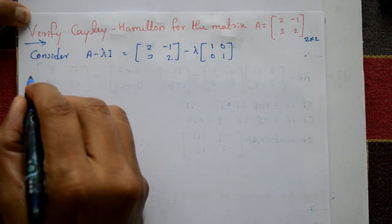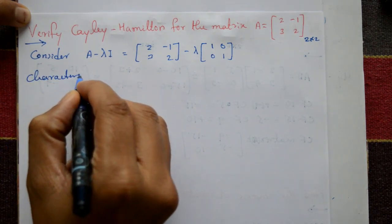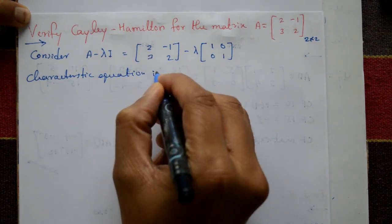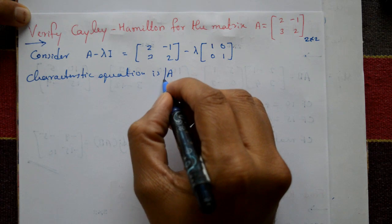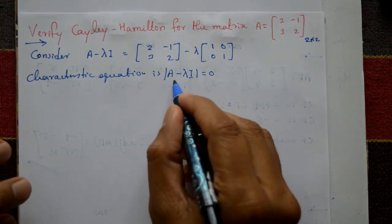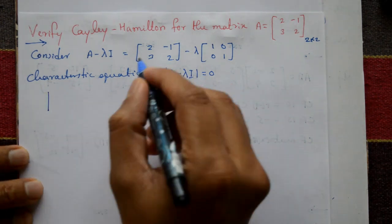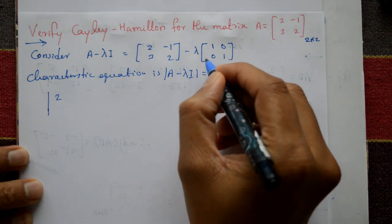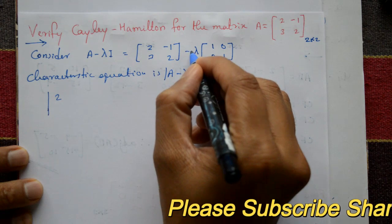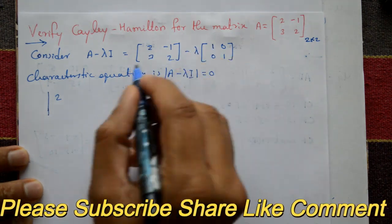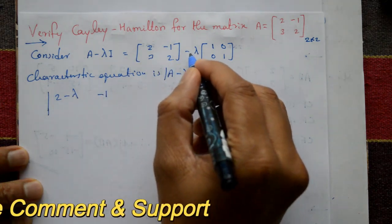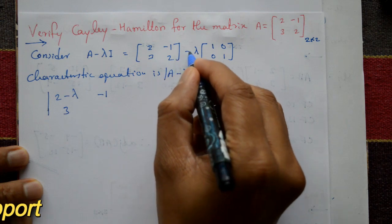Now the characteristic equation is given by the determinant of A minus lambda I equal to 0. Multiplying lambda into the identity gives [[lambda, 0], [0, lambda]], and subtracting: the first element is 2 minus lambda, giving the matrix [[2-lambda, -1], [3, 2-lambda]].